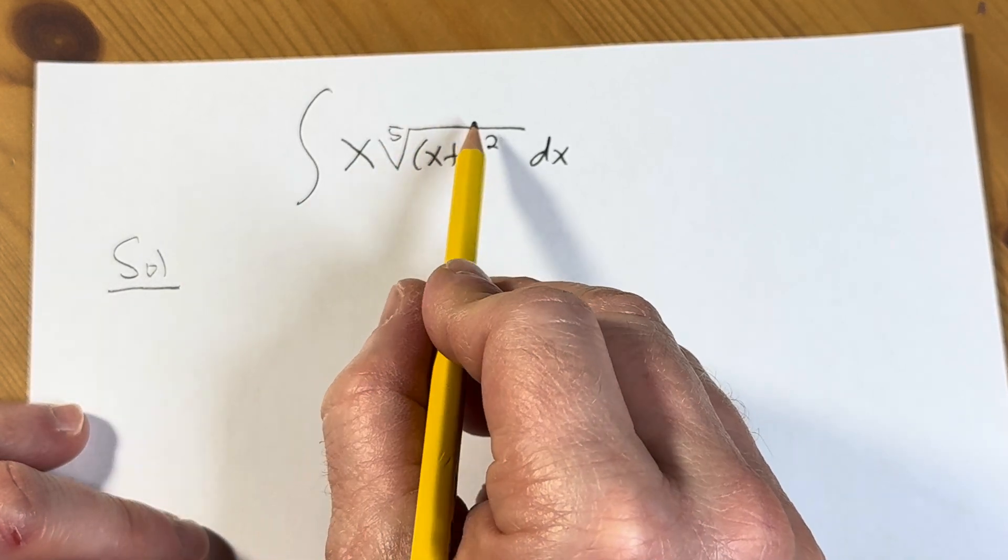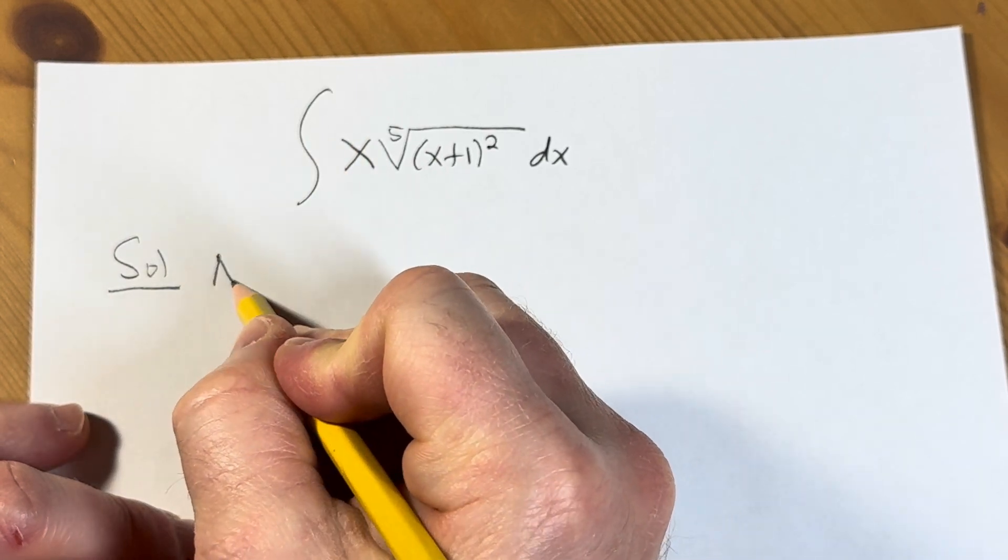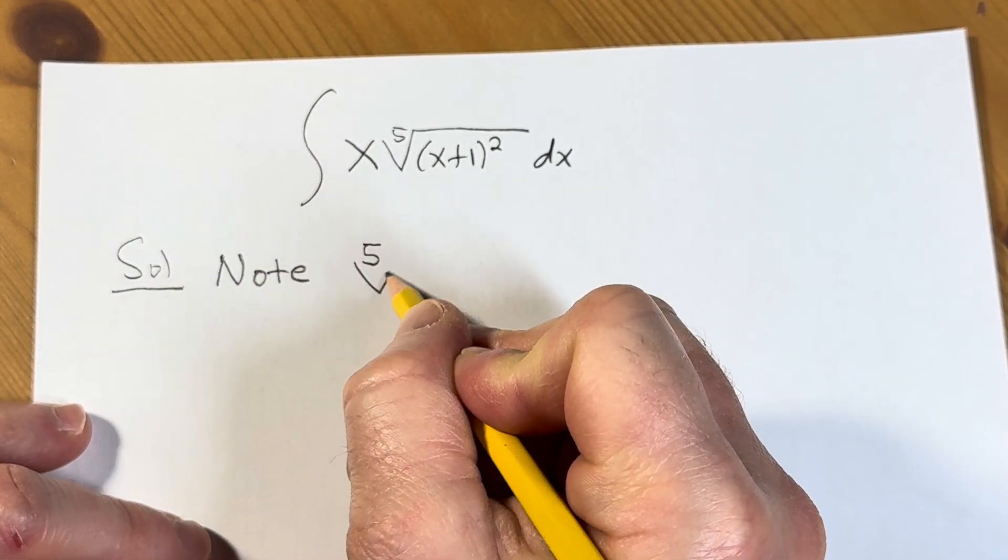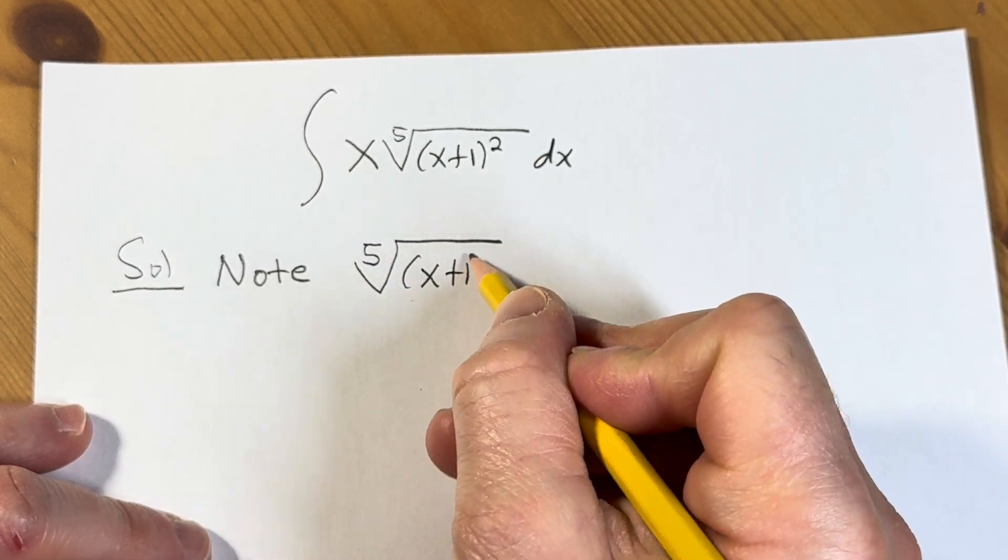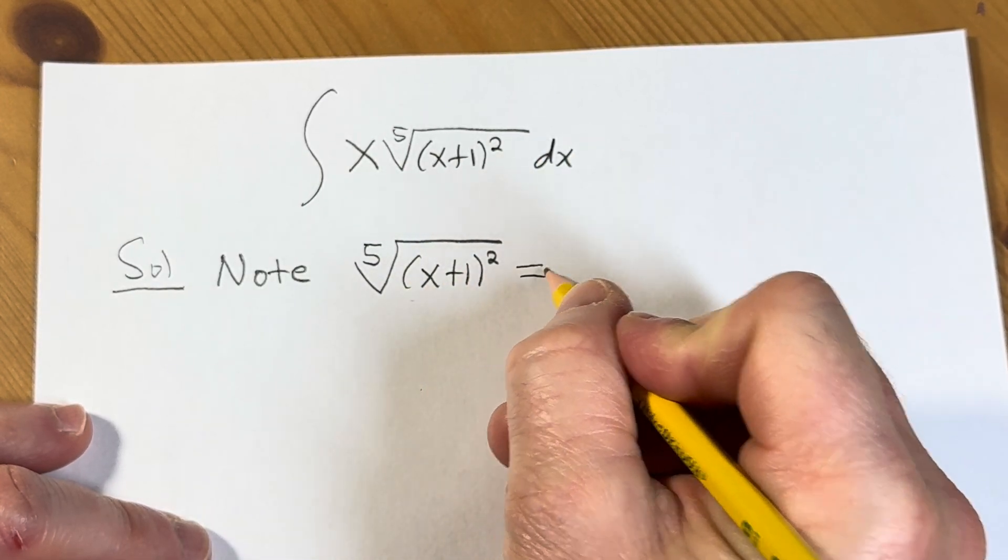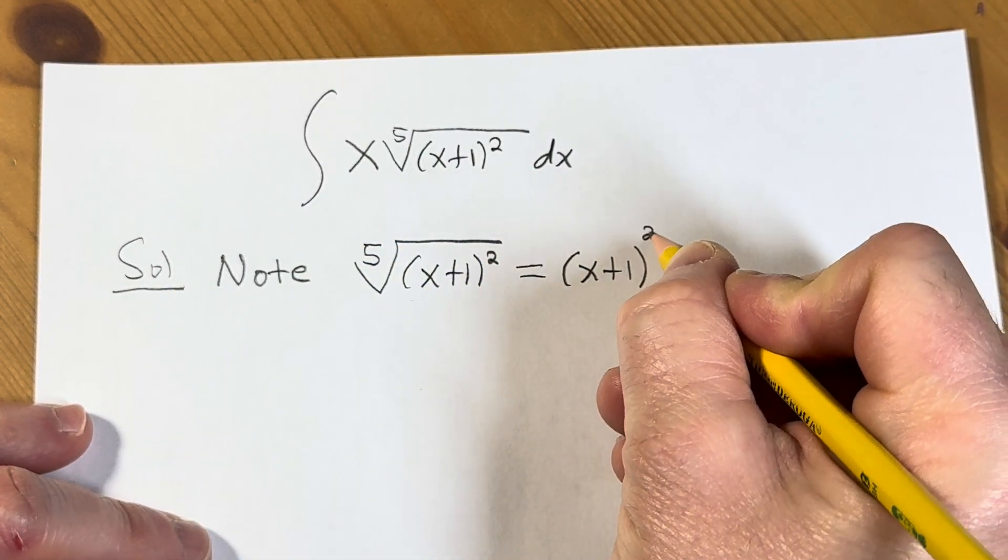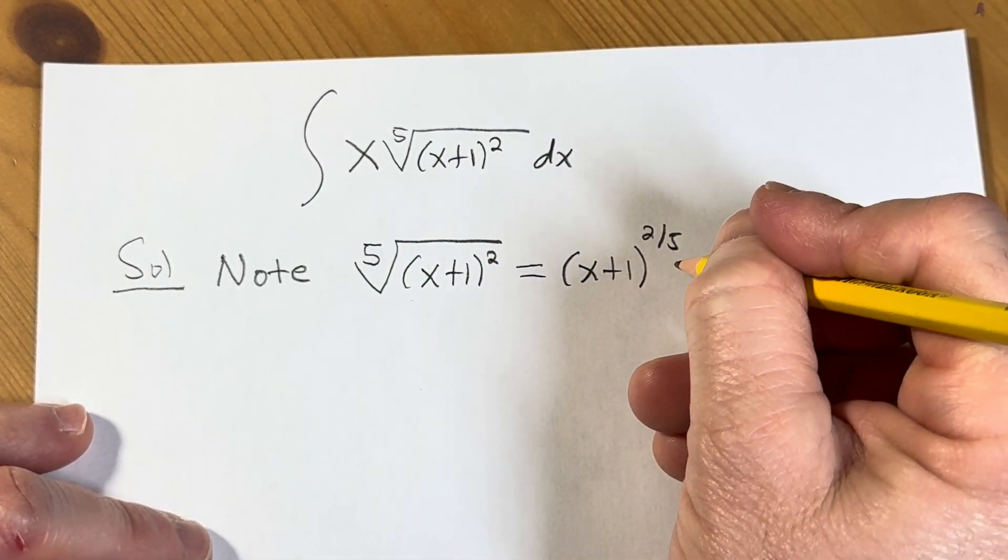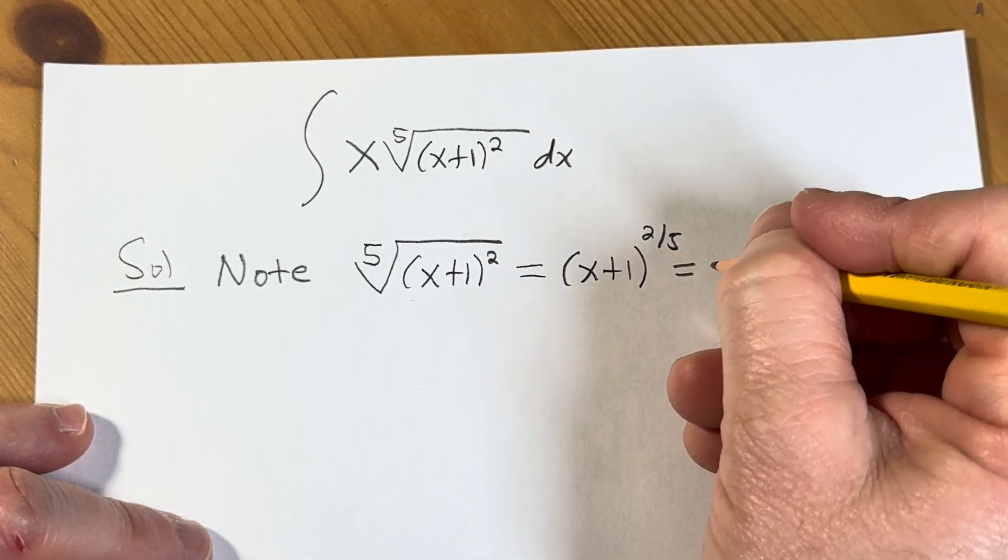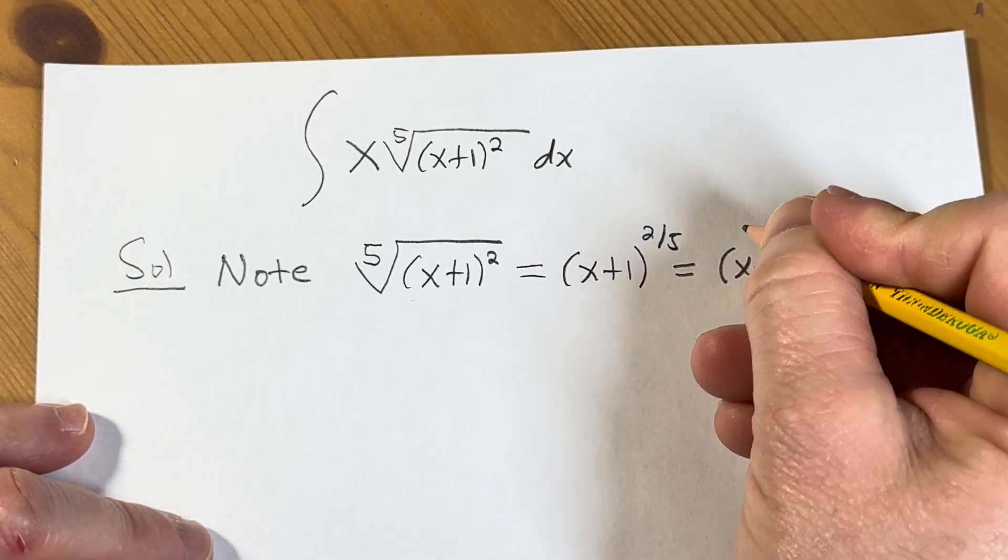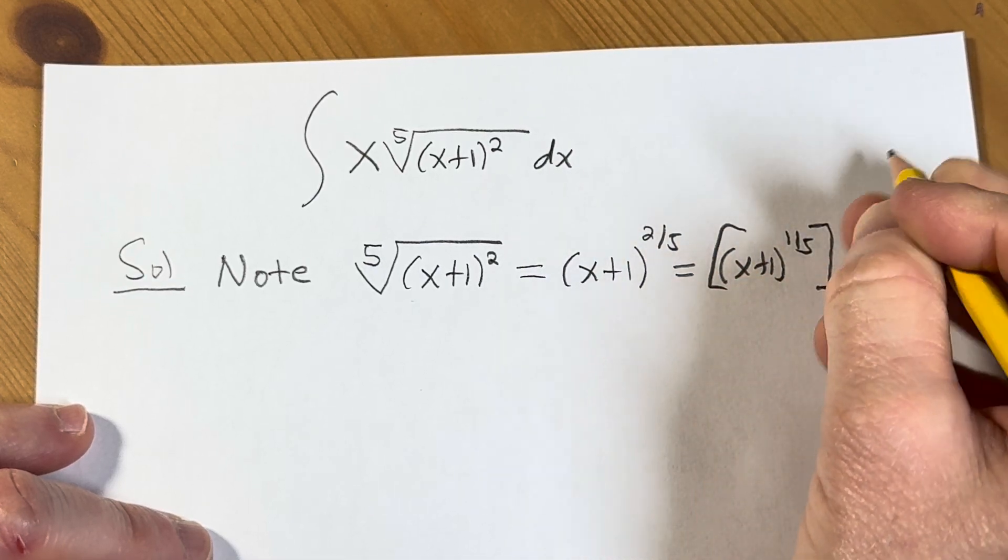So what we're going to do first is maybe think about this a different way. Notice that the fifth root of the quantity x plus 1 squared can be written as the quantity x plus 1 to the 2 over 5. And you can think of this as the quantity x plus 1 to the 1 fifth squared.